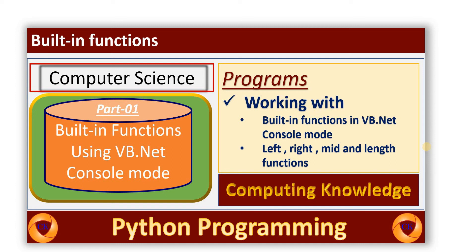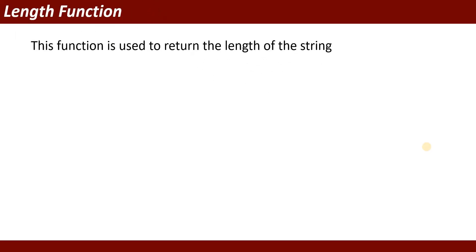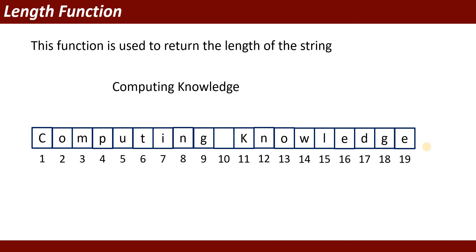Bismillahirrahmanirrahim. In this video session I will show you how to use built-in functions in VB.NET console mode. We will cover Left, Right, Mid, and Length functions. The Length function is used to return the length of a given string — it returns the number of characters in that string. For example, 'computing knowledge' has 19 characters, including the white space. Length equals 19.